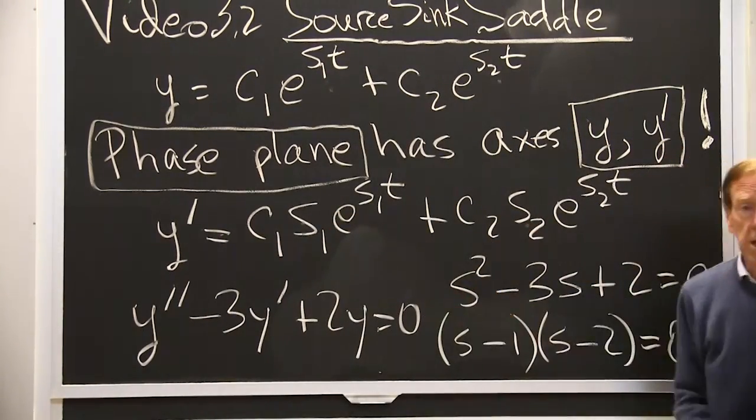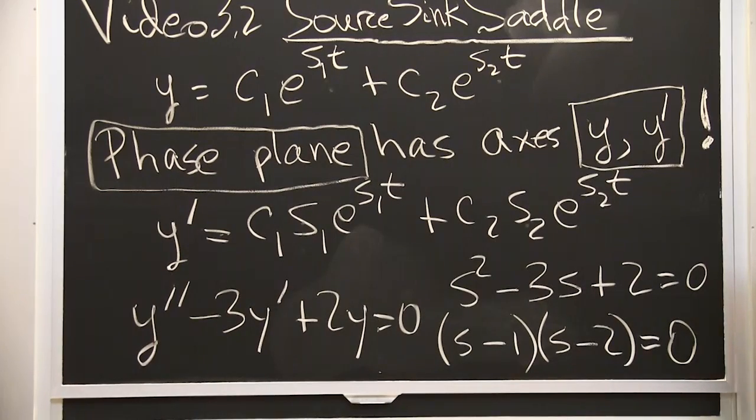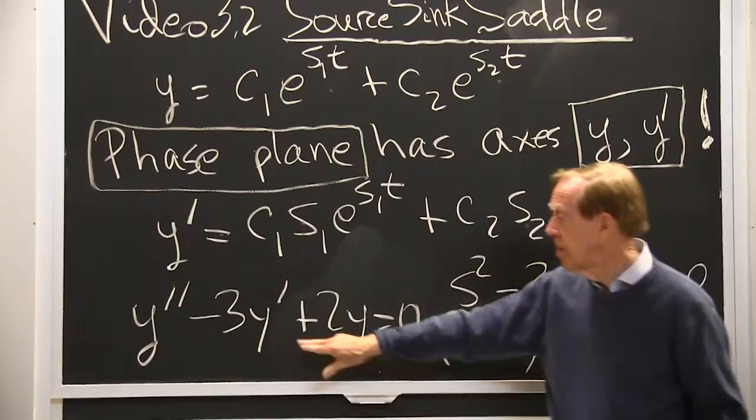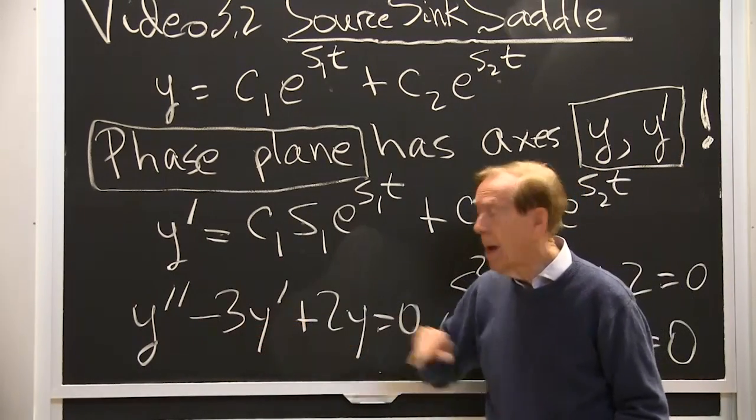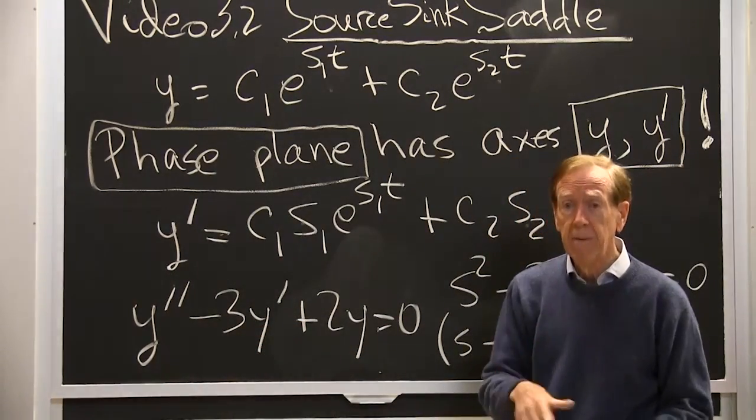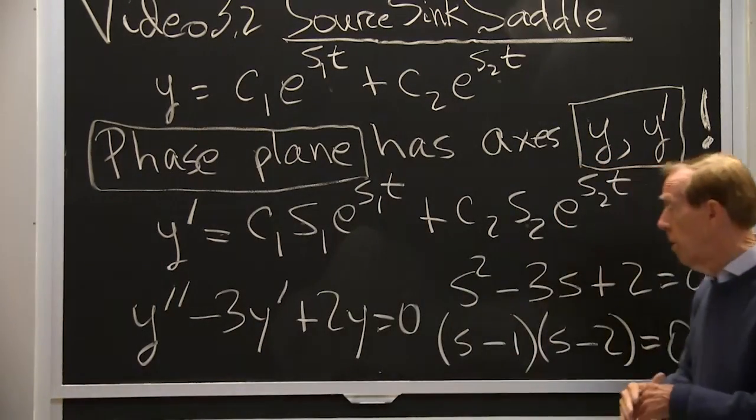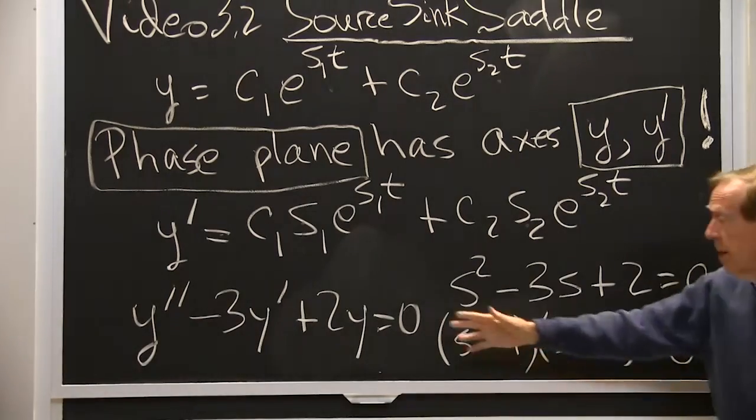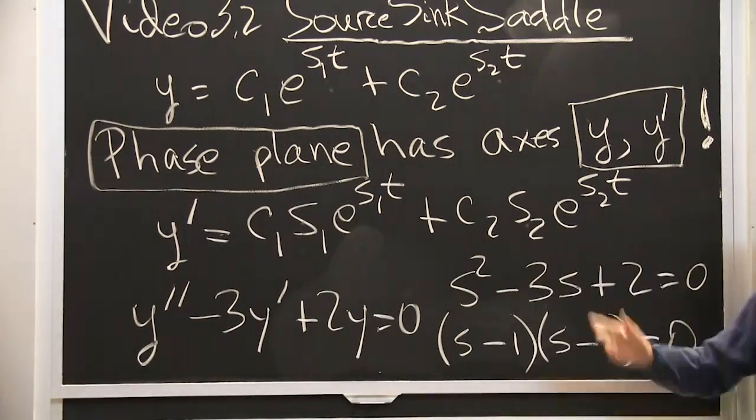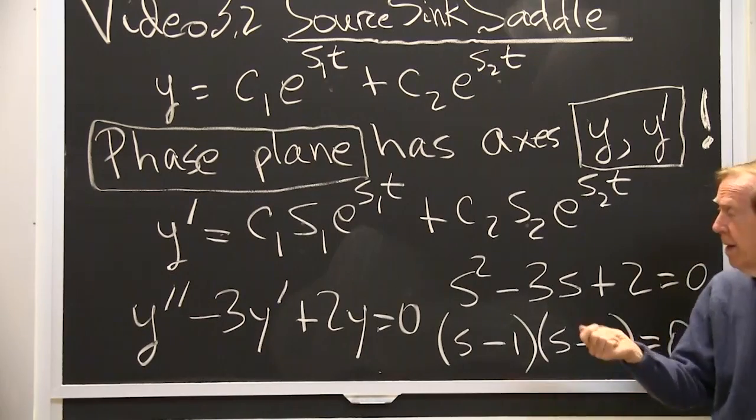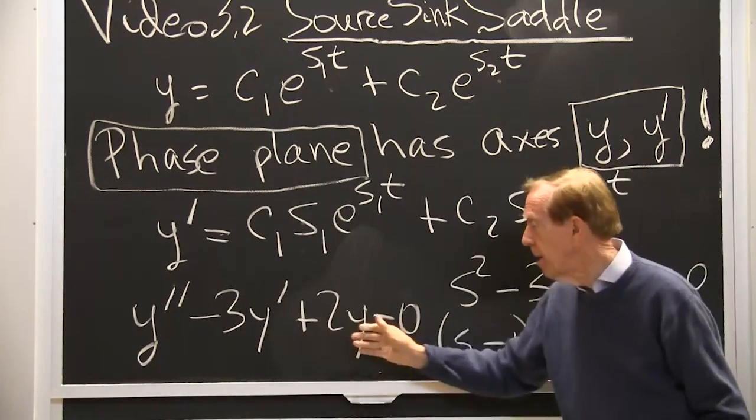Here is the first example. I took this particular equation. Notice that the damping term is negative. I have negative damping. This will be unstable. Solutions will go out to infinity. I can find those solutions because I look for e to the st. I plug in e to the st.